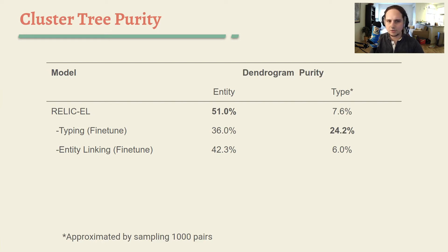Our results show that our approach works surprisingly well out of the box for detecting entity clusters. However, it does not do as good of a job capturing types of mentions according to the UMLS ontology. We perform additional experiments fine-tuning the mention encoder on held-out data to predict UMLS entities and types, and find that while this can improve our ability to capture type structure, it has an overall detrimental effect on our ability to cluster entities.